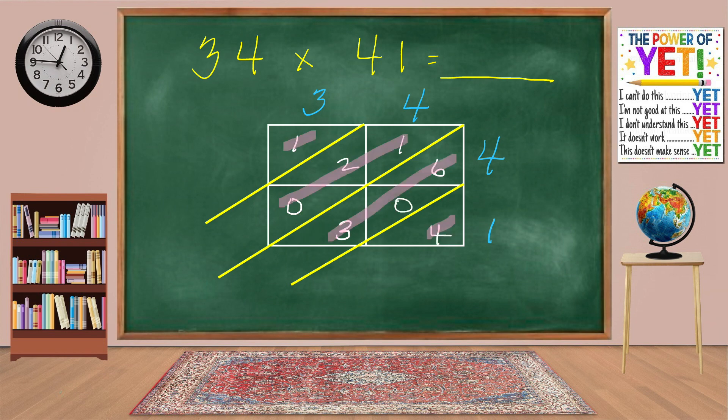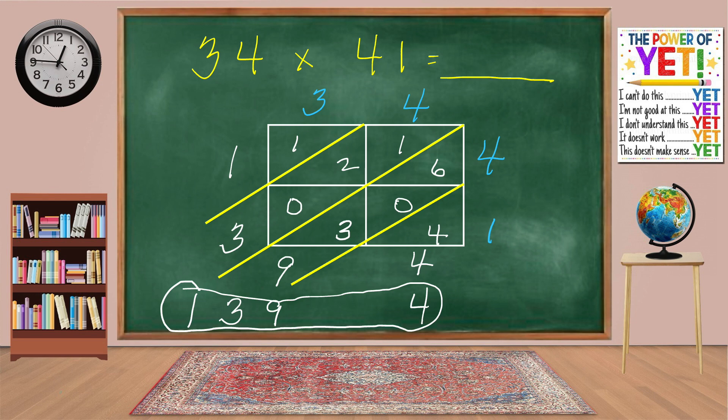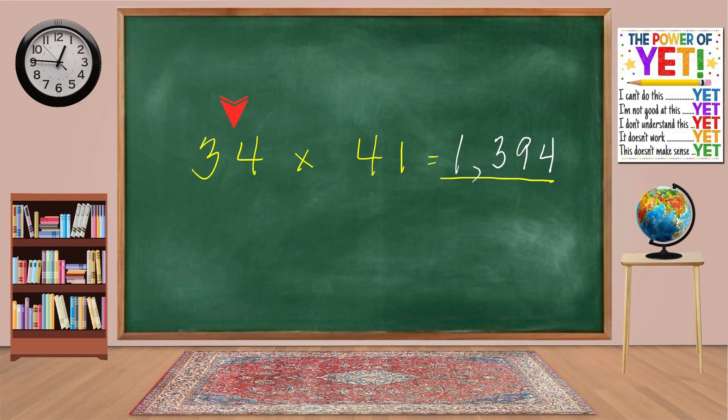Let's add diagonally starting on the right. 4. 3 plus 0 plus 6 equals 9. 0 plus 2 plus 1 equals 3. 1. We have all single digit numbers, so we can bring those right down. 4, 9, 3, 1. Put the numbers in the answer space. Place a comma before the last three digits. Our answer is 1,394. 34 times 41 equals 1,394.